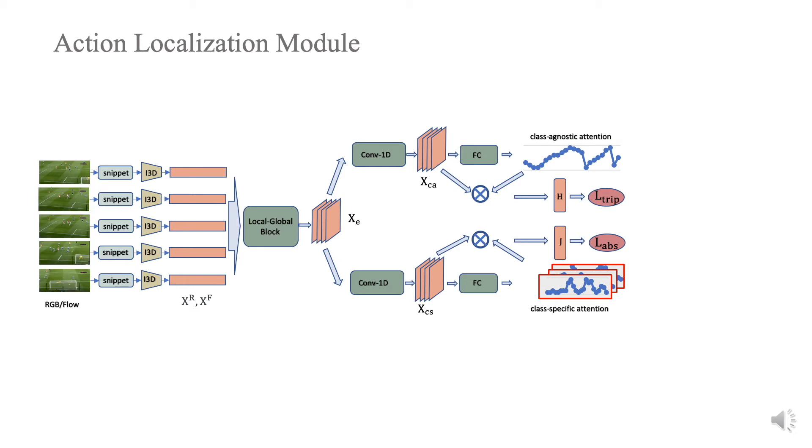The outputs of the two branches are the class-agnostic attention weights and the class-specific attention weights, respectively. Class-agnostic and class-specific attention weights are combined to predict action class for the video.